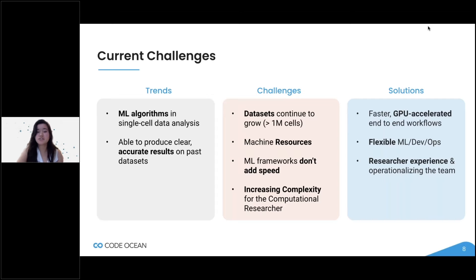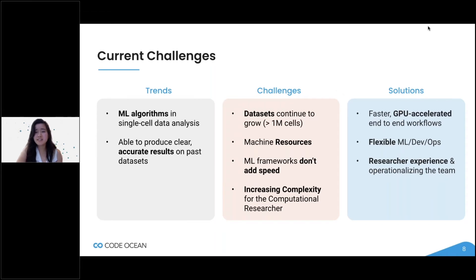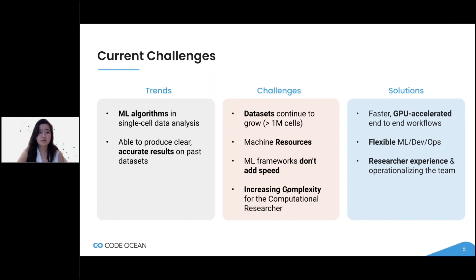That also ties into another challenge: sometimes researchers don't have the compatible machine resources that are required to process a very large single cell data set. And with all these challenges occurring, as a computational researcher might seek solutions, increasing complexity can occur. This can result in mental barriers or apprehensiveness about attempting solutions like GPU acceleration — they might be nervous about implementing it because of all the dependencies and requirements involved in executing such a workflow.